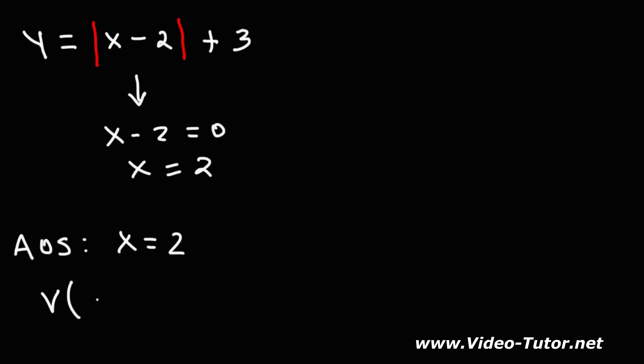And it's also the x-coordinate of the vertex. To find the y-coordinate of the vertex, you need to take this number, plug it back into the formula. When you do that, you're just going to get the number outside of it, which is 3. So that's how you can find the vertex and the axis of symmetry for an absolute value function.